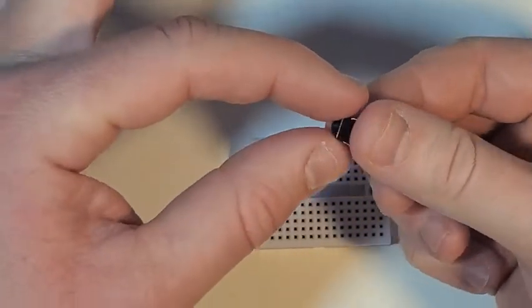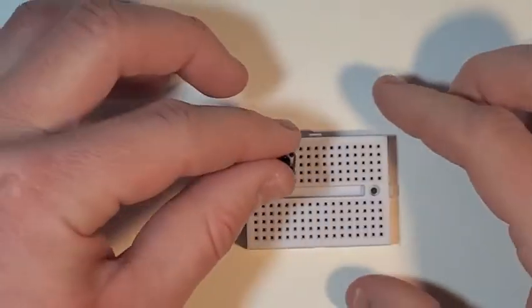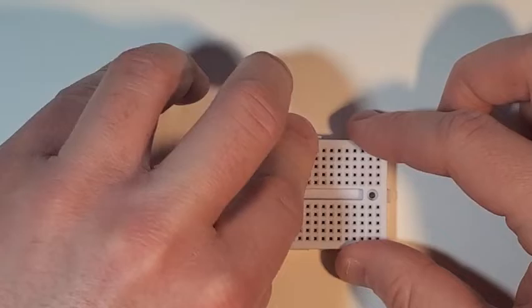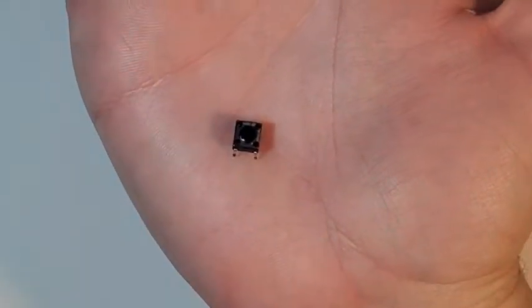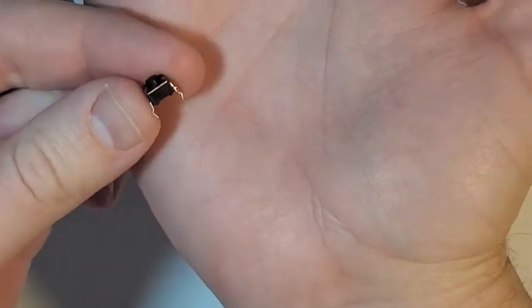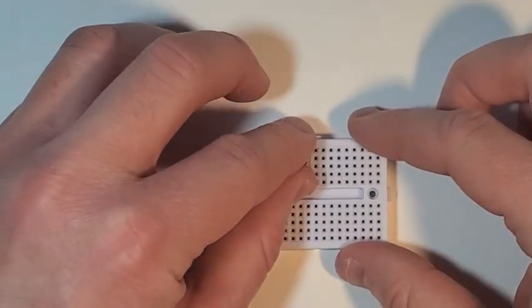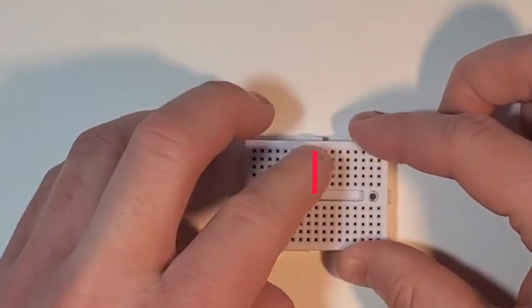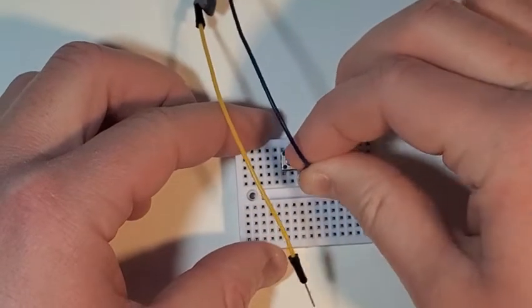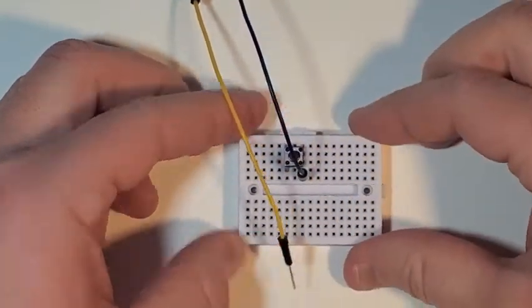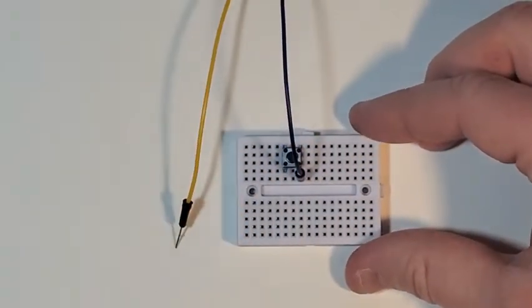Now take your button and place it in the breadboard as shown. Take note of the direction of these prongs. The curved side should be parallel with the direction of the vertical rows. Now take your battery. Take one of the wires and stick it in the lower right hole connecting to the prongs of the button.